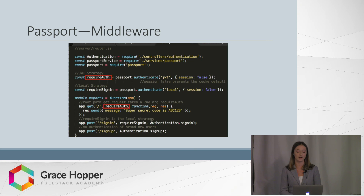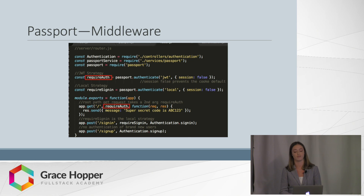The require auth strategy intermediates the route as a second argument before the response is sent. It serves as a type of pre-check before security information is provided, such as the super-secret code of ABC123.